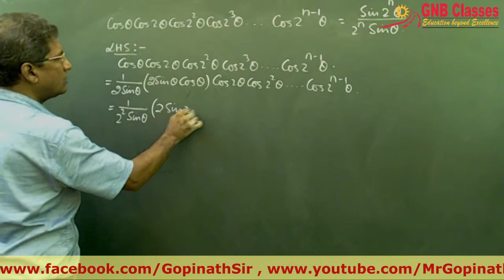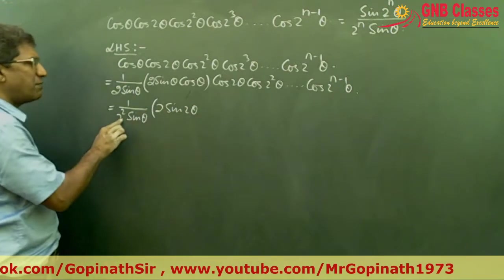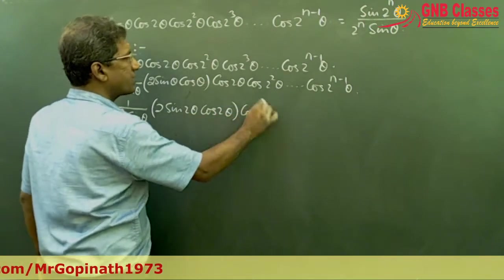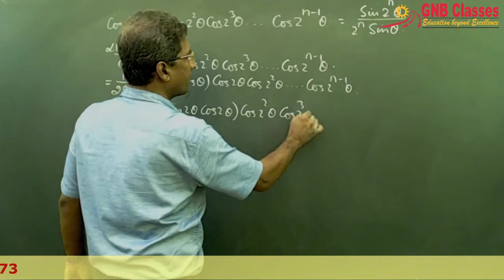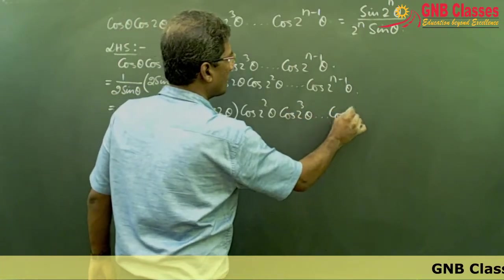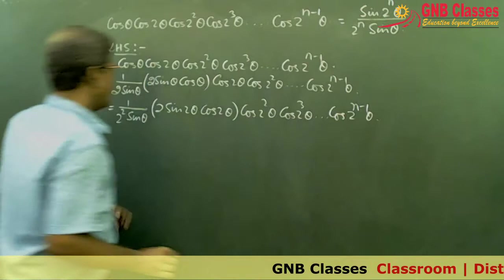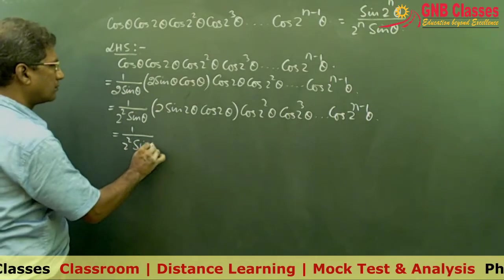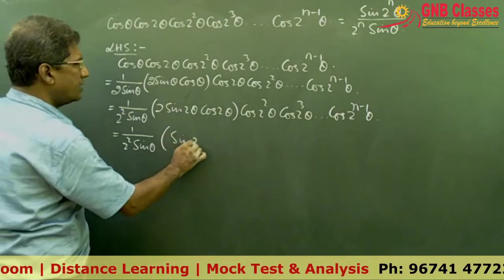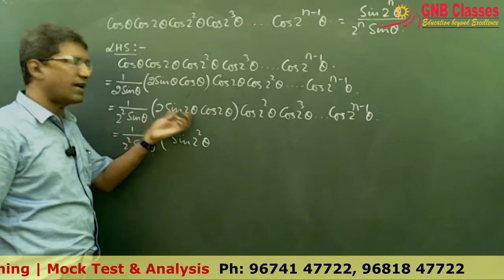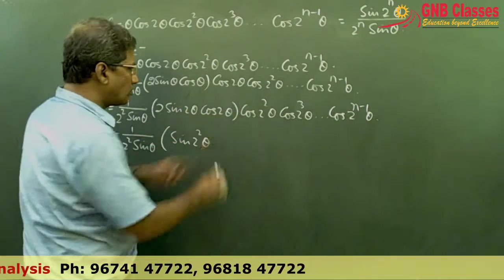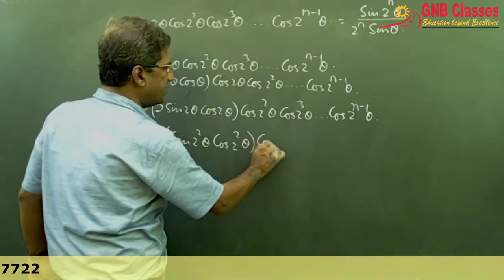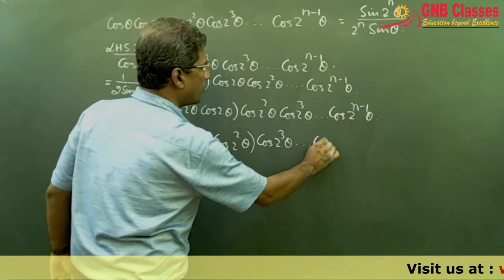Dividing by 2 again, so it is 2² sin θ in the denominator. Sin 2θ · cos 2θ — the rest of the terms are outside. Now 2 sin 2θ · cos 2θ gives sin 2²θ, because 2 sin θ cos θ = sin 2θ. Taking cos 2²θ inside and keeping the other terms outside.